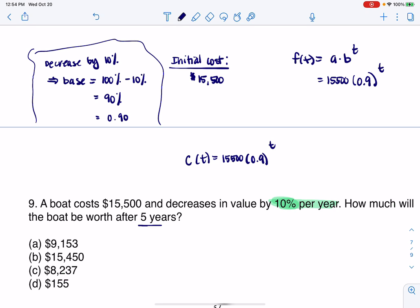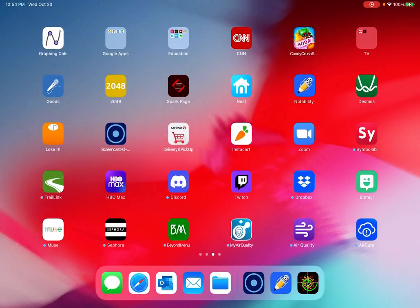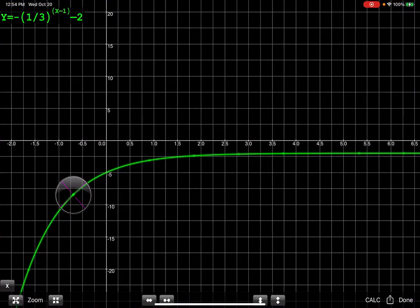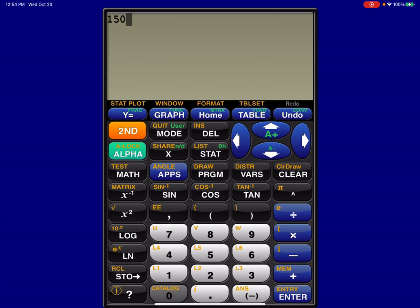How much will this be worth after five years? That's a time value, so let's find C(5). This will be $15,500 times 0.9 to the fifth. Let me head to my calculator. When I enter that in, it's about $9,152.60.